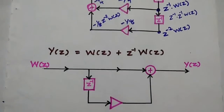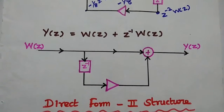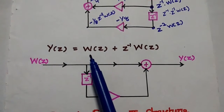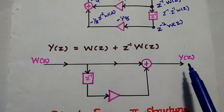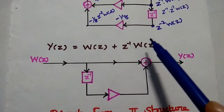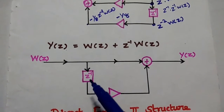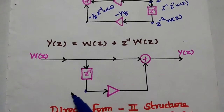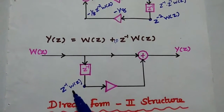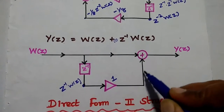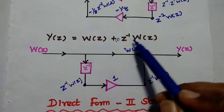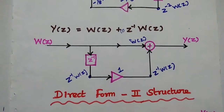Similarly, for the second equation — Y(Z) = W(Z) + Z⁻¹·W(Z) — W(Z) is the input and Y(Z) is the output. W(Z) is given to one delay element Z⁻¹, giving Z⁻¹·W(Z); the multiplication value here is 1. Adding W(Z) and Z⁻¹·W(Z) gives Y(Z). This is the structure for the second equation.